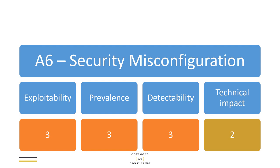A6 is interesting in that it is generally quite exploitable, quite common, and quite easy to detect. What you can actually do with a misconfigured site depends a little bit — in some cases, seeing something like directory listing on a web server or out-of-date SSL may be quite limited in impact, but in other cases you could take full advantage of information or even take control over the web server and use it as a springboard into a larger attack.